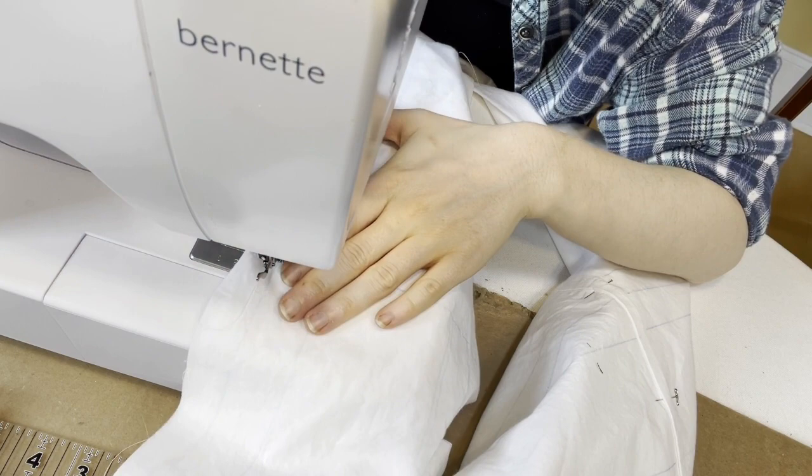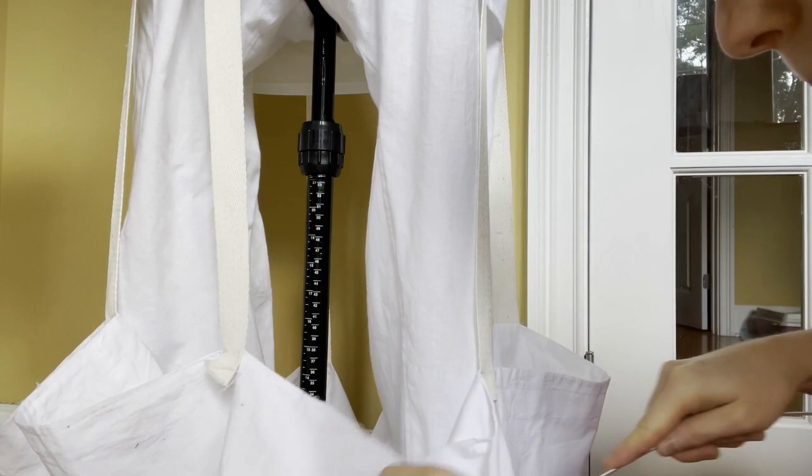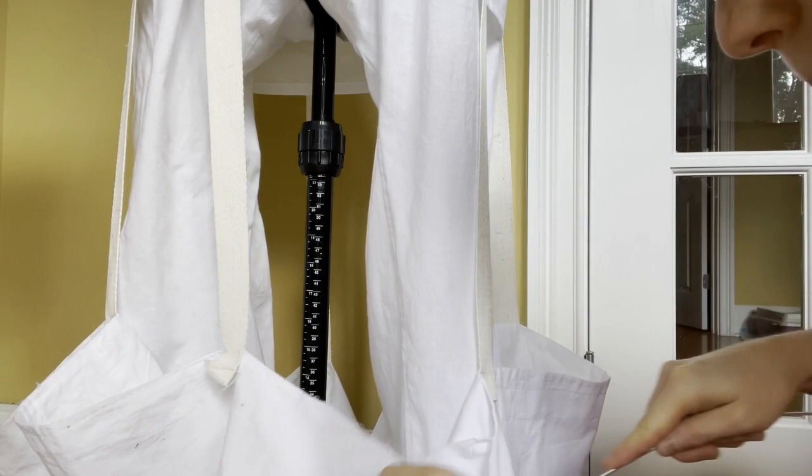The first step is to sew the bag that will encase the bottom hoops. Basically, it's a giant circle with channels sewn in and then vertical strips of twill tape get sewn onto that. Next, the bottom hoops are installed into the bag. It's simply a matter of sliding them in, joining the ends, I used gaffer's tape, and sewing shut the opening.